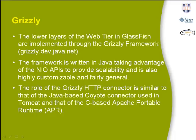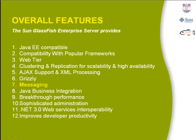The lower layers of the web tier in GlassFish are implemented through the Grizzly framework. The framework is written in Java, taking advantage of the NIO APIs, referred to as Scalable Network and File I/O, to provide scalability. It is also highly customizable and very general. The role of the Grizzly HTTP connector is similar to that of the Java-based Coyote connector used in Tomcat and the C-based Apache portable runtime.